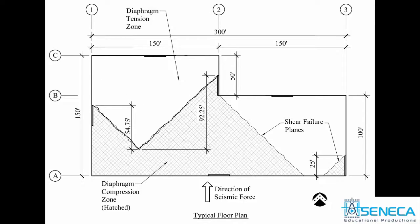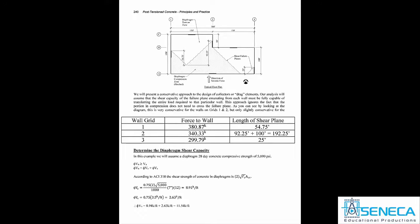That explains the general philosophy. Now we'll get into the brass tacks: re-establishing the demand to each wall and the shear capacity of the failure plane at each wall's disposal. In summary, here are the three walls resisting lateral loading in the direction of force we're considering, the force to each wall from the rigid diaphragm analysis, and the lengths of the shear planes associated with each wall.